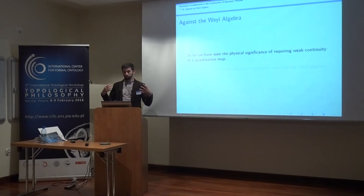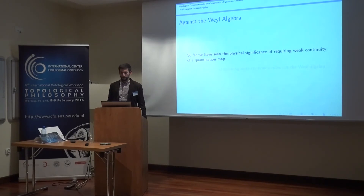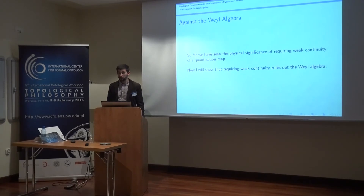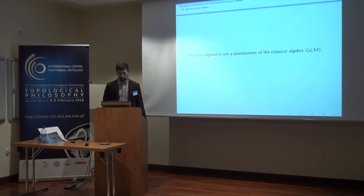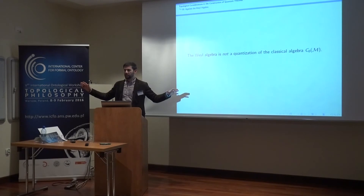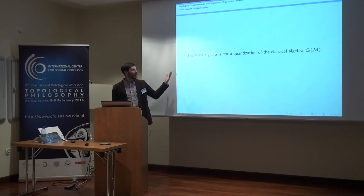So far we've seen some pieces of the physical significance of requiring weak continuity of our quantization map. Now I'll show that this can do real work for us. If we require weak continuity of our quantization map, then this rules out the Weyl algebra — that standard choice for quantizing the classical particle. The first thing to notice is that the Weyl algebra isn't a quantization of the algebra that is the natural one to use in classical physics — those functions that vanish at infinity. That algebra has the right state space — the probability measures — but you can't quantize it into the Weyl algebra.